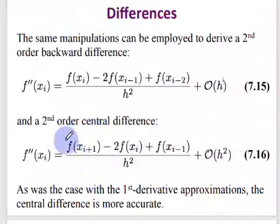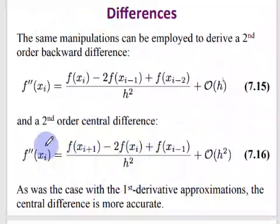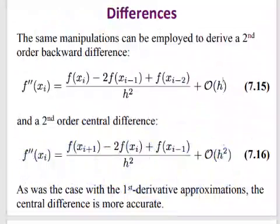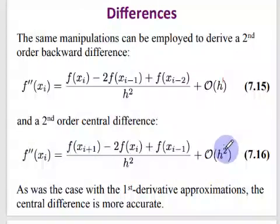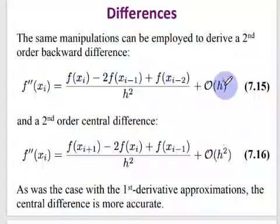As was the case with the first derivative, you can also talk about the central or midpoint difference for the second derivative. The central difference gives a second-order error, whereas the forward and backward differences give first-order error, making the central difference more accurate.